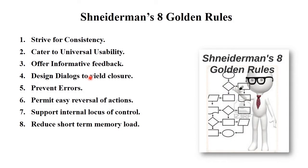These are the main 8 Shneiderman's golden rules: first, strive for consistency; second, cater to universal usability; third, offer informative feedback; fourth, design dialogue to yield closure; fifth, prevent errors; sixth, permit easy reversal of action; seventh, support internal locus of control; and eighth, reduce short-term memory load. These are the 8 golden rules which will be useful for each and every designer to generate a quality product or quality design. Let's see them one by one.